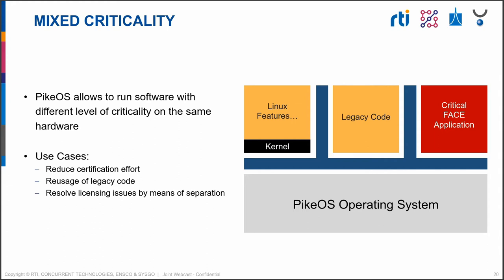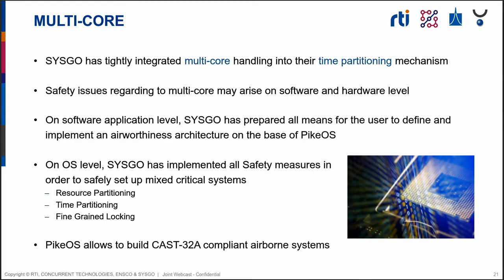Typical use cases involve dividing a complex system into different safety levels and certifying only the very critical components at the highest level. This strict partitioning also helps resolve open-source licensing issues in design applications. PikeOS is the first operating system certified in the railway market up to the highest safety level, SIL 4, accomplished by transferring the PikeOS time partitioning mechanism to multi-core processors — a transition also applied in the avionics world.